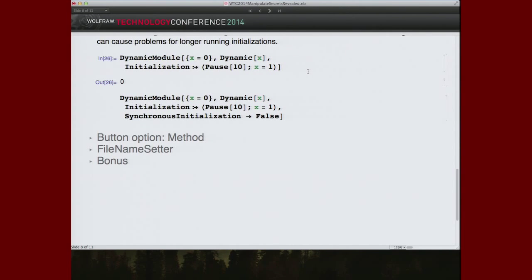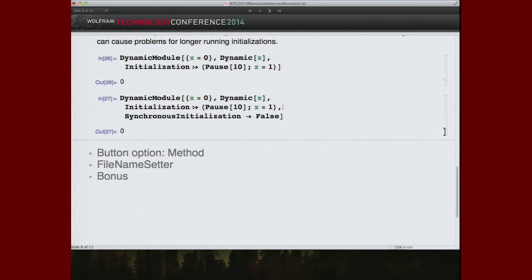In manipulate, you have some indication. In dynamic module, the lower level primitive, you do not. But if you set synchronous initialization false, then, okay, you have this synchronous dynamic, which shows x to be zero. The initialization is still churning away. And when it's done, you see the value of x has changed. Again, synchronous initialization is a dynamic module box option. It's also a manipulate option. So if you have manipulate initializations, you can use it.